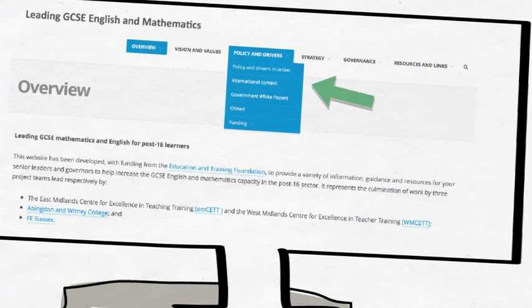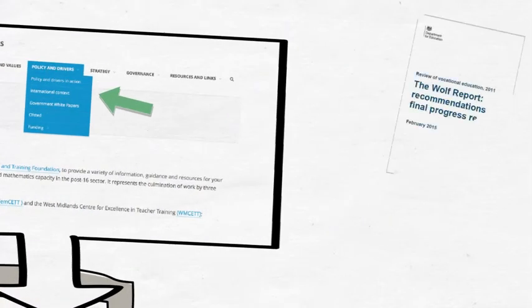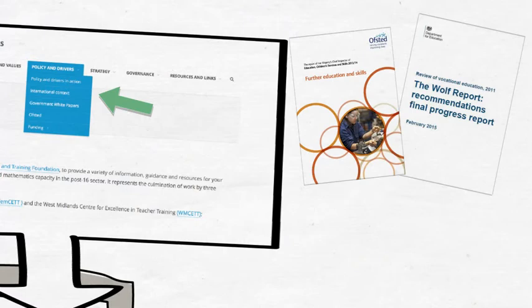Policy and drivers pinpoints current policy and drivers in England as well as explaining the international context. It gives links to government white papers, provides data from Ofsted and information about funding.